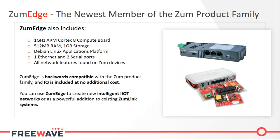The ZoomEdge houses an ARM Cortex-A8 compute platform running the IQ Linux environment, and with this product the IQ Linux environment comes standard at no extra fee. The compute board is a one gigahertz ARM Cortex-A processor with 512 megabytes of RAM and a gigabyte of storage. The device is also fully over-the-air compatible with the Zoom line of devices.